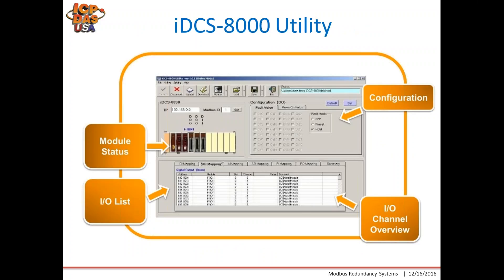The IDCS utility is shown here. It shows the module status, provides the IO list, and configuration — for example, the thermocouple modules, where you select the thermocouple type — and the IO channel view shown at the bottom, where it shows you each IO channel type. There are different tabs for the various types of IO, and you can monitor the status of each IO in this utility.